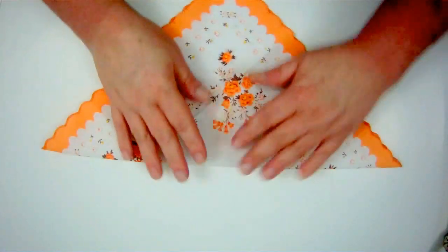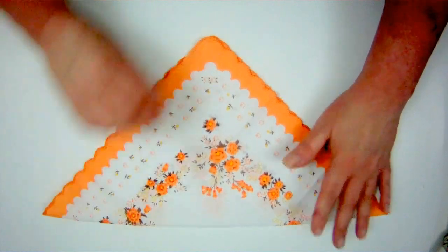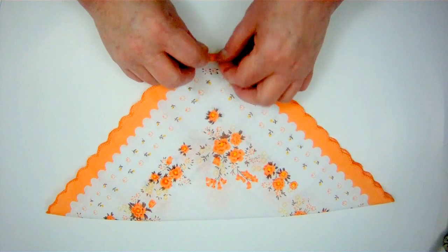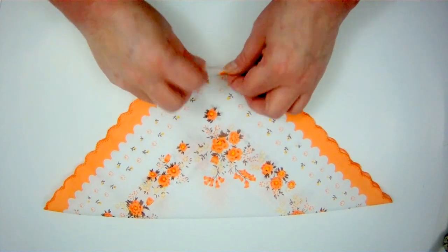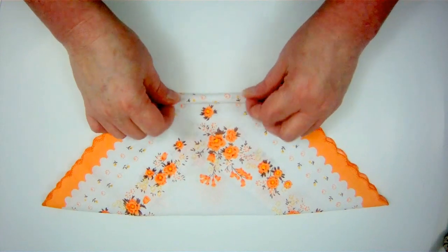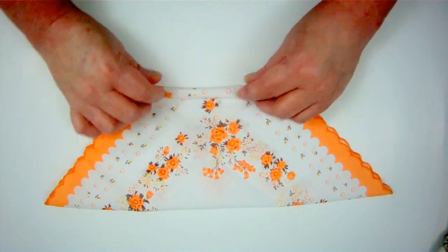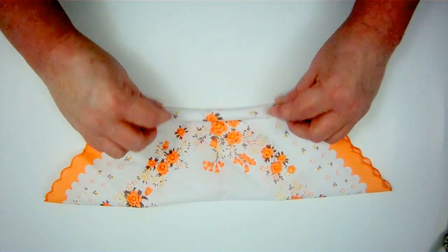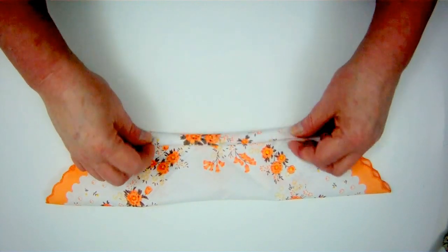Now you're going to turn it and roll it from the point, this point. Try to roll it as snugly as you can, and as evenly as you can. Make sure that it stays snug all the way out to the edges.